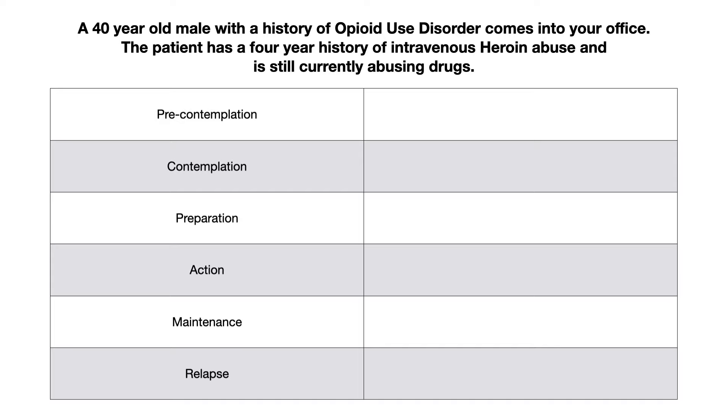So for pre-contemplation, a person would be in pre-contemplation if they said, I don't have a drug problem. So if you had a 40 year old male with a clear history of opioid use disorder, and the first thing out of their mouth is I don't have a drug problem, they're in pre-contemplation. Again, they've not yet acknowledged that they even have a problem. And that clearly puts them into pre-contemplation.